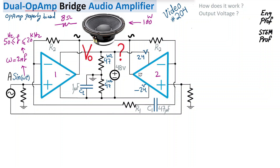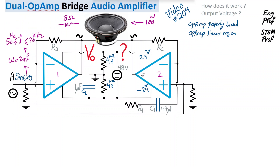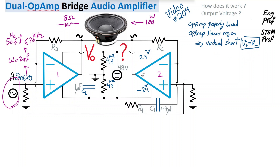The output of each op-amp is connected via resistor R2 to its inverting (negative) terminal, so negative feedback is present. Therefore the op-amps are enforced to operate in the linear region, and we benefit from the virtual short principle — meaning the voltage at the positive terminal equals the voltage at the negative terminal. Since the AC input voltage A×sin(ωt) is applied differentially between the positive terminals of the two op-amps, by virtual short that same voltage also appears between the negative terminals of the two op-amps.